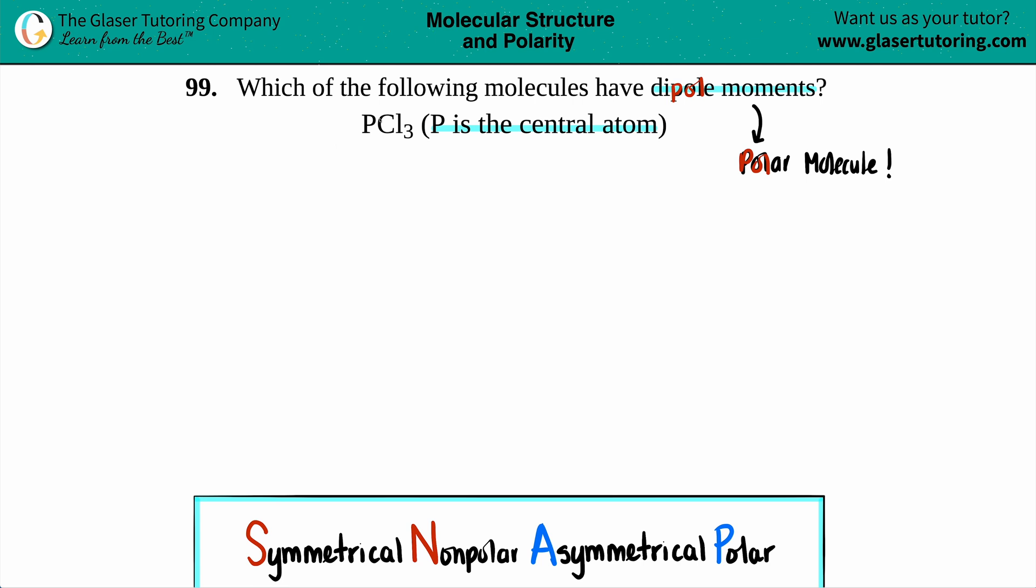Now we have to figure out, is there that certain pull in PCl3? In order to figure this out, I would take a few seconds and draw the Lewis structure. Lewis structures will give you a lot of information: dipole moments, bond polarity, molecular geometry, hybridization, and molecular polarity. So just take a couple of seconds and draw the Lewis structure.